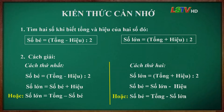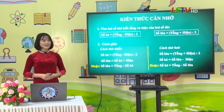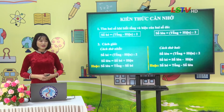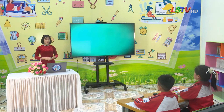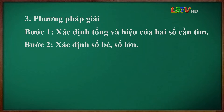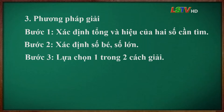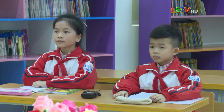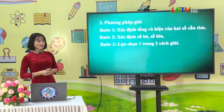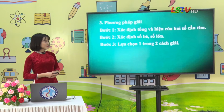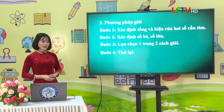Bài toán tìm 2 số khi biết tổng và hiệu của 2 số đó là một dạng toán cơ bản của lớp 4. Khi giải dạng toán này, các em có thể thực hiện theo các bước: Bước 1, xác định tổng và hiệu của 2 số là bao nhiêu. Bước 2, xác định đâu là số bé, đâu là số lớn. Bước 3, lựa chọn 1 trong 2 cách giải — nếu muốn tìm số bé trước thì chọn cách 1, nếu muốn tìm số lớn trước thì chọn cách 2. Bước 4, thử lại kết quả của bài toán.